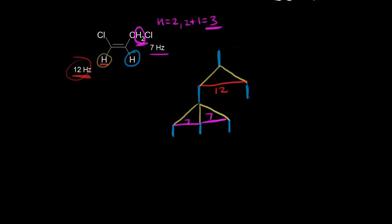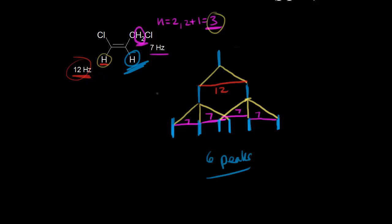The same splitting happens for the other line of the doublet — it is also split into a triplet with distances of 7 hertz on each side. So how many peaks do we expect for the signal of the blue proton? Counting: one, two, three, four, five, six. We expect six peaks for the signal, because of the neighboring protons in different environments. This is complex splitting.